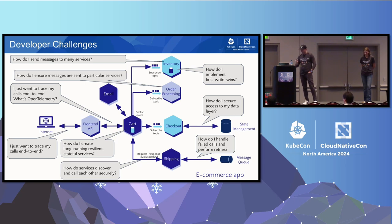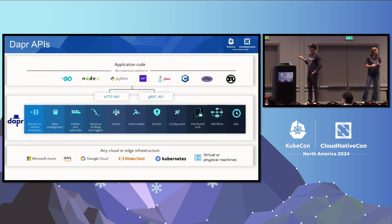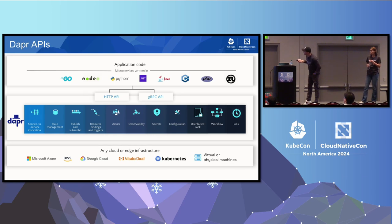This is a high-level overview of what DAPR can do for you. You can check our website for more information. Here are some of the APIs: we have the Jobs API we're going to talk about today, Workflow, Distributed Lock, Configuration, Secrets, Observability, Actors, Binding, PubSub, State Management, and Service Invocation.